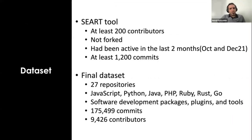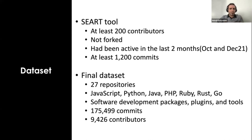To do so, we need a dataset. We use the SIRC tool, which is basically a dataset of GitHub repositories and their specifications. We queried repositories with at least 200 contributors, active at least two months before our study, and with at least 1,200 commits. We created a small dataset of 20 repositories from diverse programming languages like JavaScript, Python, Java, PHP, Ruby, and .NET, and diverse project types like packages, plugins, and tools. In total, these 27 repositories consist of 175,000 commits from 9,500 contributors.